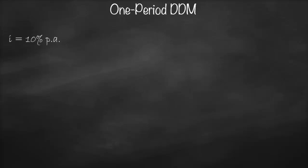Number one is a one-period dividend discount model, which means we will hold the share for only one year. Let's assume that our effective annual interest rate is 10%, and we have only one year. After one year, we receive a dividend of $1 and then we will sell the share for $10. So what will be the price today? We need to use the present value of all future cash flows we receive, which means we need to get the present value of dividends after one year and the present value of the share price after one year.